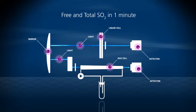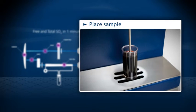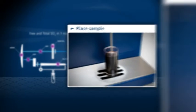Here's how it works. Place the wine sample under the pipette, then press start.